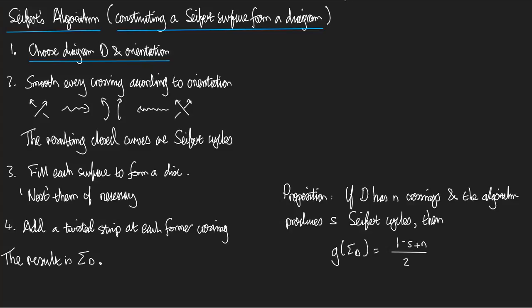Okay, so step one, choose a diagram D and an orientation. So, let's take the normal figure eight. Am I going to get this diagram right? Yeah, it looks good. Okay. Choose a diagram D and an orientation. There we go. We've done step one. And now I'm going to apply the algorithm to this copy of my diagram.